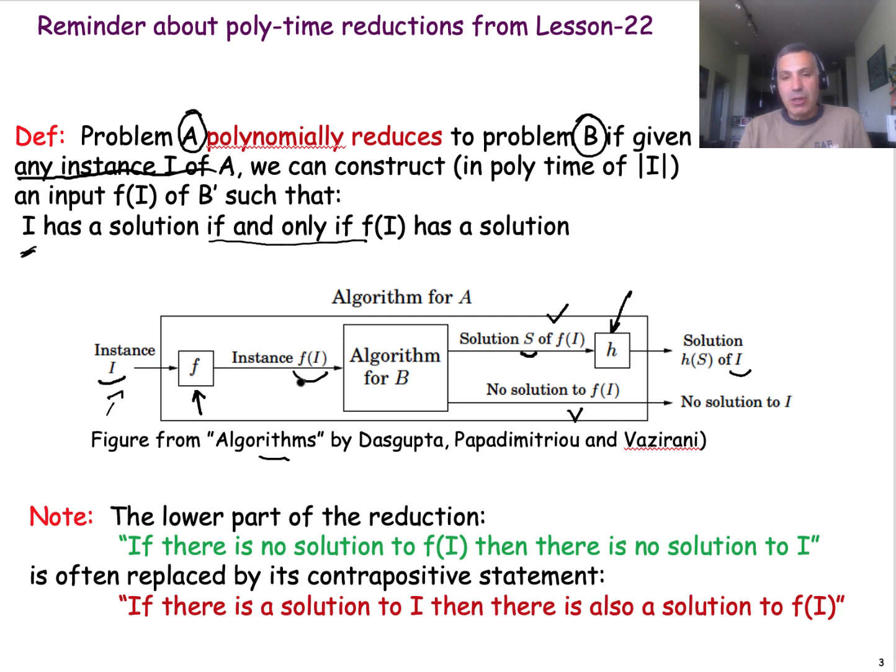So, in other words, what we usually prove in these reductions is that if there is a solution for F(I), then there is a solution for I, and if there is a solution for I, then there is a solution for F(I). If you prove both of these directions, then you have accomplished this reduction correctly.